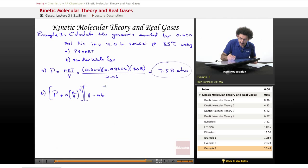And V minus nB equals nRT. And then when we rearrange, we get P equals nRT divided by V minus nB minus A times n over v squared.